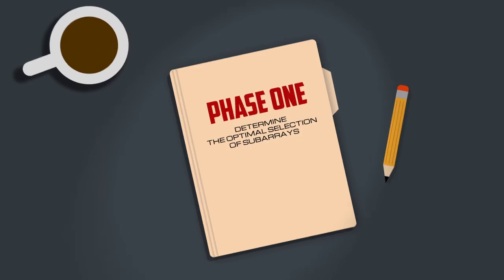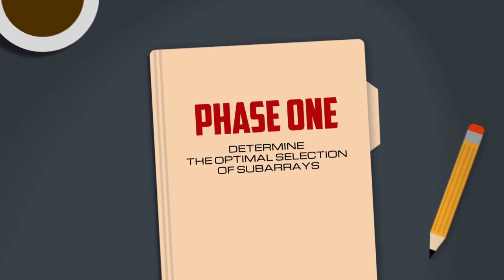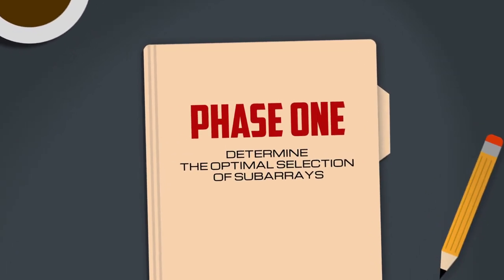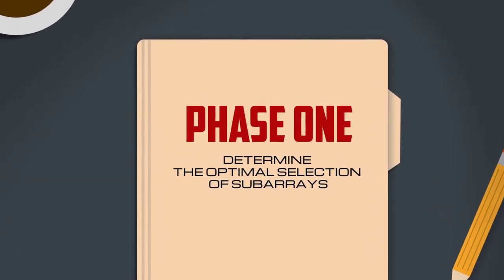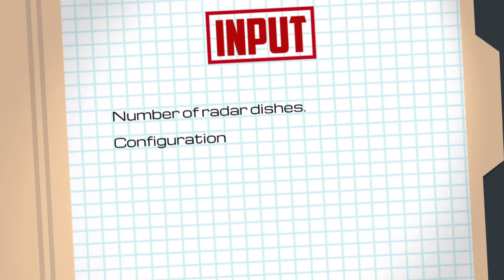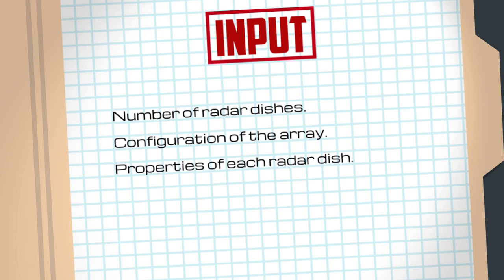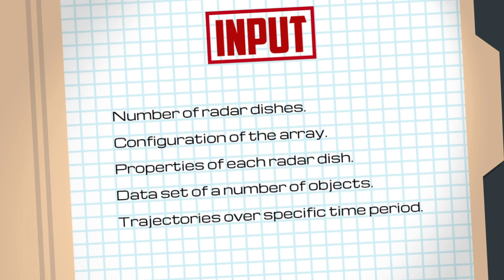In phase one, you'll need to determine the optimal selection of subarrays to track a number of objects in the given trajectory data set. We'll arm you with the following input: the number of radar dishes, configuration of the array and properties of each radar dish, as well as the data set of a number of objects, their trajectories over a specific time period, and the amount of time needed to accurately track an object.